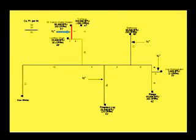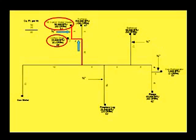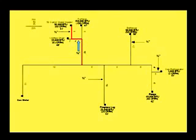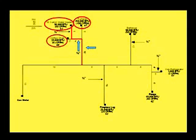The 4-foot section of pipe will be supplying the branch line to the clothes dryer with a demand of 35 cubic feet per hour, plus the 50 cubic feet per hour of the water heater, for a total demand of 85 cubic feet per hour. Refer to table 12-8, 60-foot row — 85 will fit under 137 — and see that a 3/4-inch pipe will accommodate the 85 cubic feet per hour demand for the 4-foot pipe.